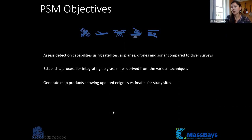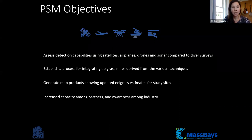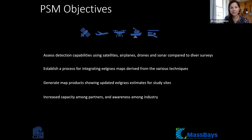We're going to generate map products showing updated eelgrass estimates for our study sites, which could have broader utility and help inform eelgrass maps across the entire state. This could also inform things calculated from eelgrass maps, such as blue carbon storage. We also aim for increased capacity among partners and awareness among industry, so that consultants who conduct surveys to support construction projects actually understand the limitations of the survey method they're using.